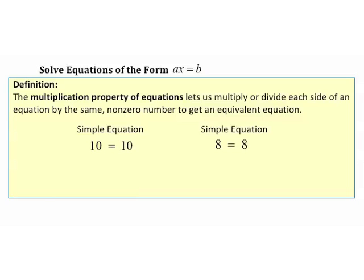Solve equations of the form A times X equals B. Let's take a look at another definition. The multiplication property of equations lets us multiply or divide each side of an equation by the same non-zero number to get an equivalent equation. For example, starting with 10 equals 10: if I multiply both sides by 4, I get 40 equals 40 — still a true equivalent equation.